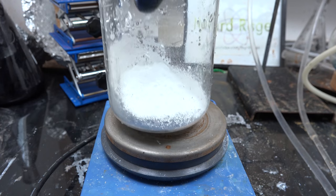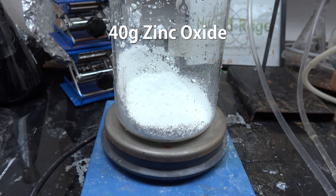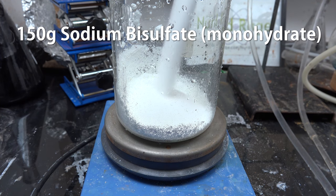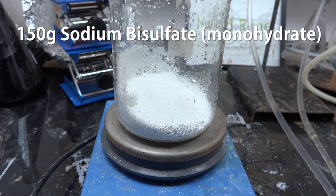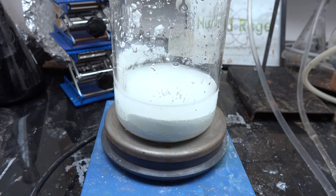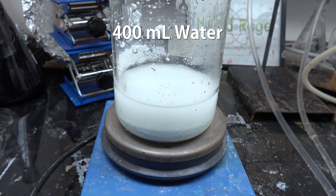First we start with 40g of zinc oxide. This can be bought from pottery supply and soap making companies. Now to this add 150g of sodium bisulfate monohydrate. This is sold as a pH lowering chemical for swimming pools. Now add a total of 400mL of water and stir until dissolved. This might take a while.